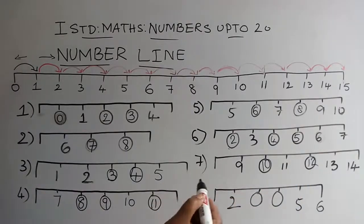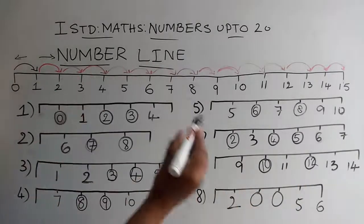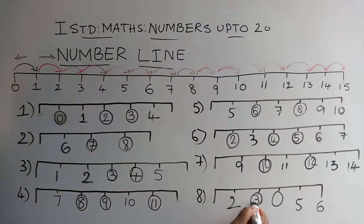Now, we have come to the last one. 2, we have here. 3 and 4. 3 and 4. 2, 3, 4, 5, 6.